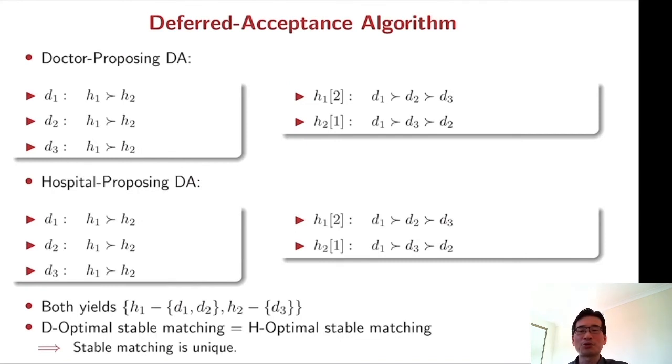In the doctor proposing algorithm, D1 proposes H1 and D2 proposes H1 and D3 also proposes H1. And then H1 is going to choose two doctors within its capacity constraint and reject just one, D3. And D3 is rejected by H1 and makes another proposal to H2 and H2 receives a proposal from D3. So that's the end of the algorithm. So H1 hires D1 and D2 and H2 hires D3.